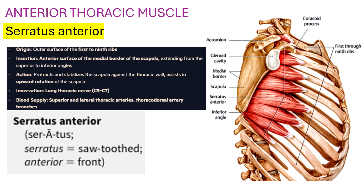Serratus anterior — outer surface of the first to the ninth ribs, ribs one through nine. Insertion is the anterior surface of the medial border of the scapula, extending from the superior to the inferior angles. Action: protracts and stabilizes the scapula against the thoracic wall, and assists in upward rotation of the scapula.